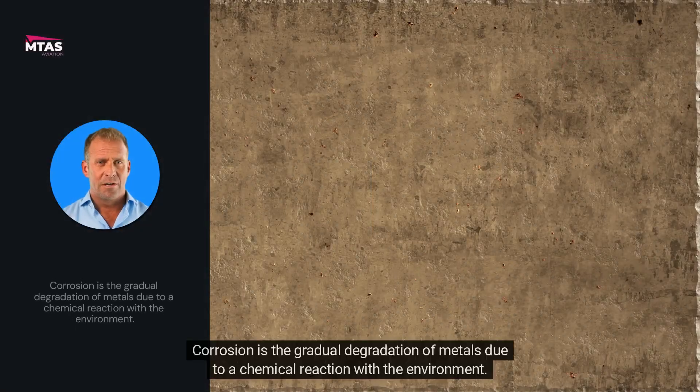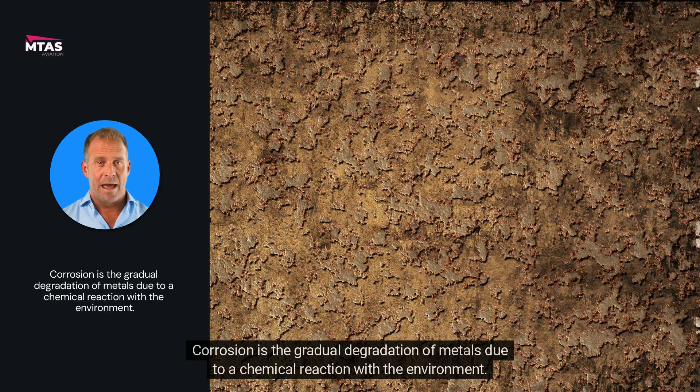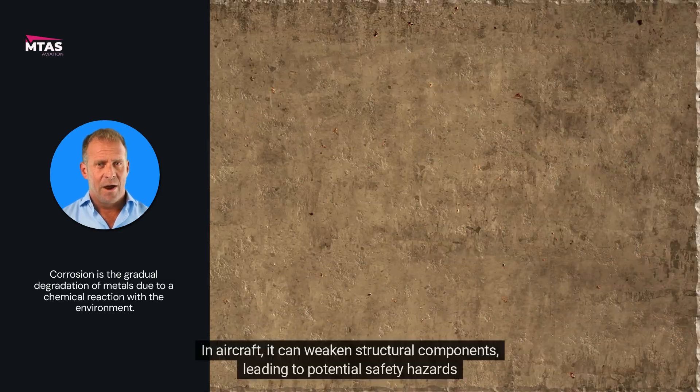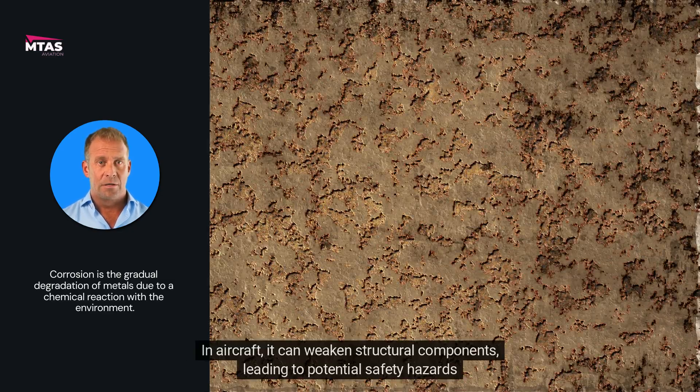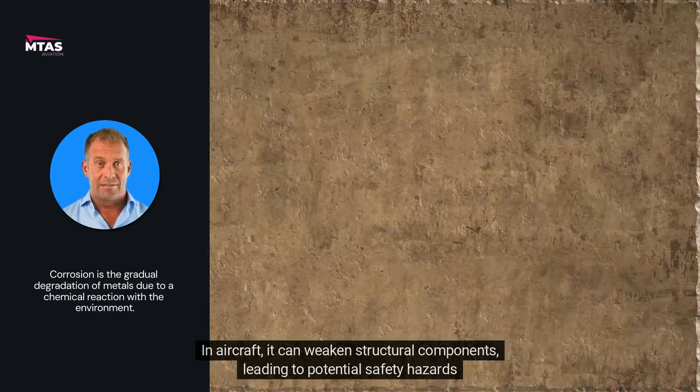Corrosion is the gradual degradation of metals due to a chemical reaction with the environment. In aircraft, it can weaken structural components, leading to potential safety hazards.